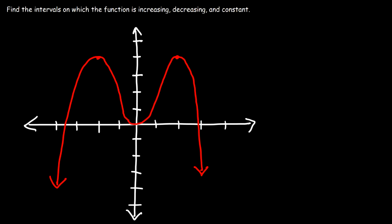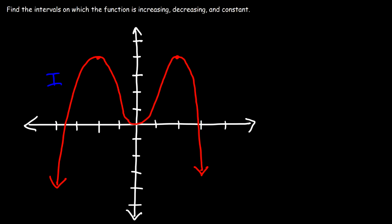Here's the last example: find the intervals on which the function is increasing, decreasing, and constant. During the first part the function is increasing, then in the next part it's decreasing, then it's increasing again, and finally it's decreasing. It's not constant for any significant period of time.